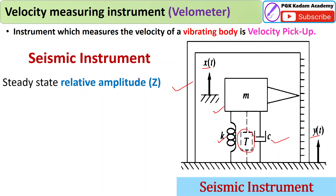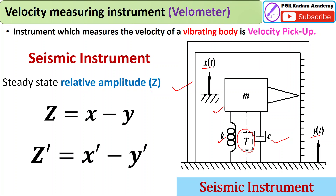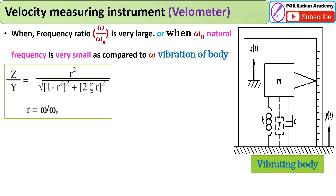This is the detail of the seismic instrument. The relative amplitude z is equal to x minus y. If you differentiate this equation, z-dot equals x-dot minus y-dot. You can calculate the velocity from this seismic instrument.